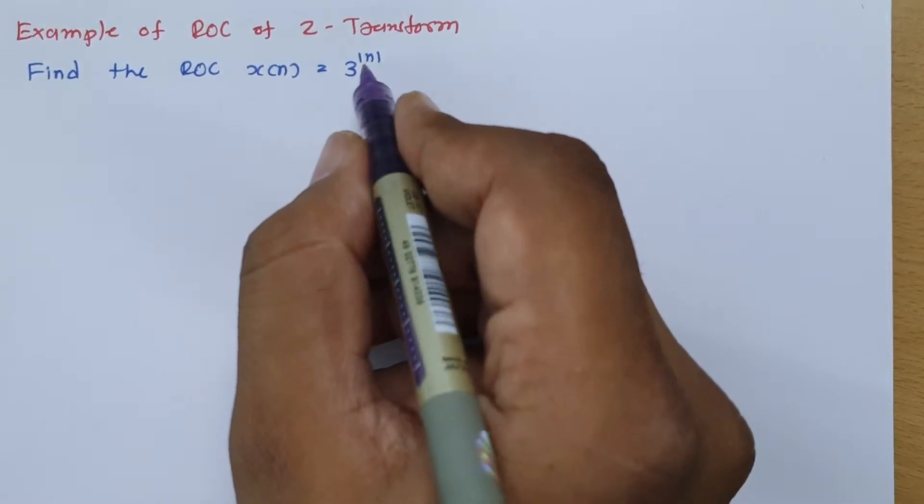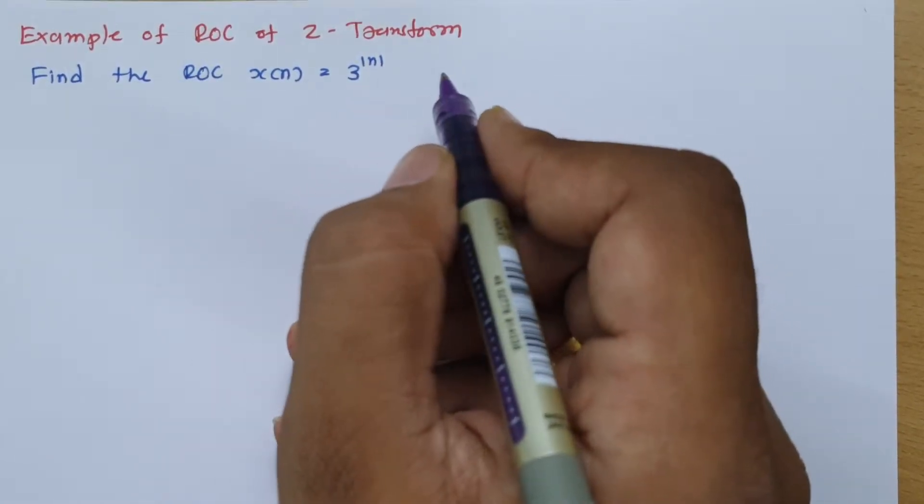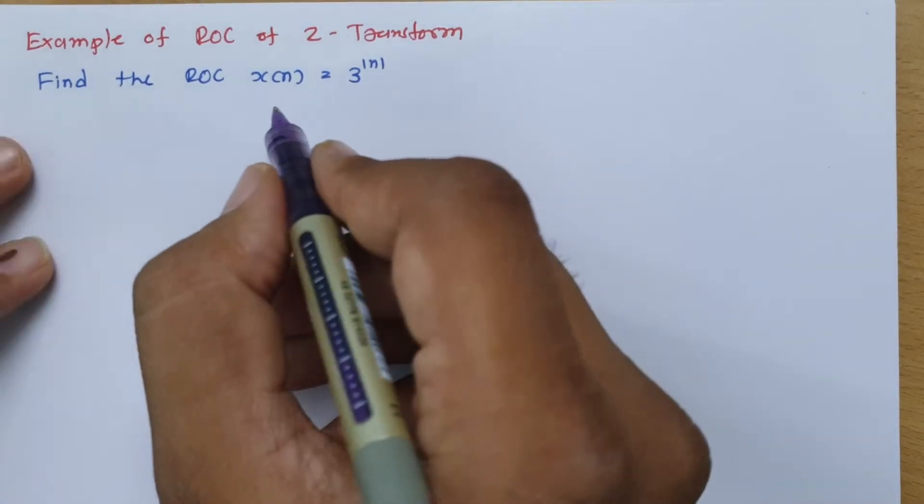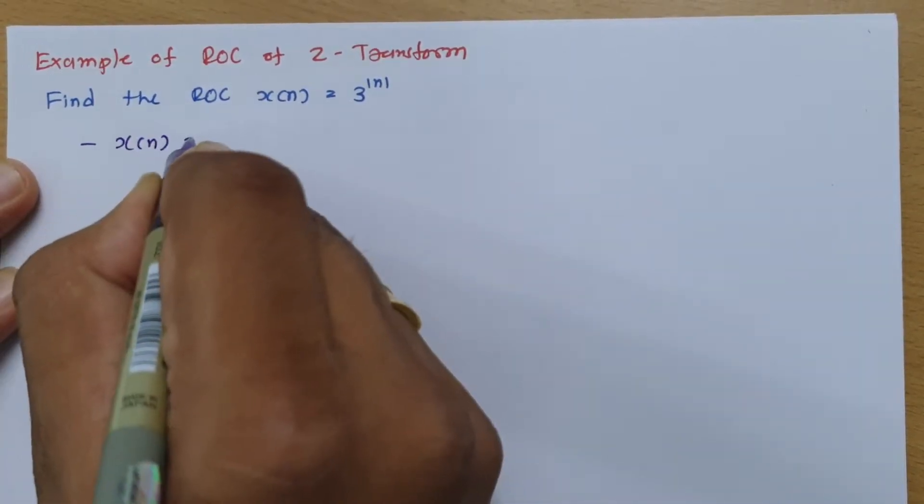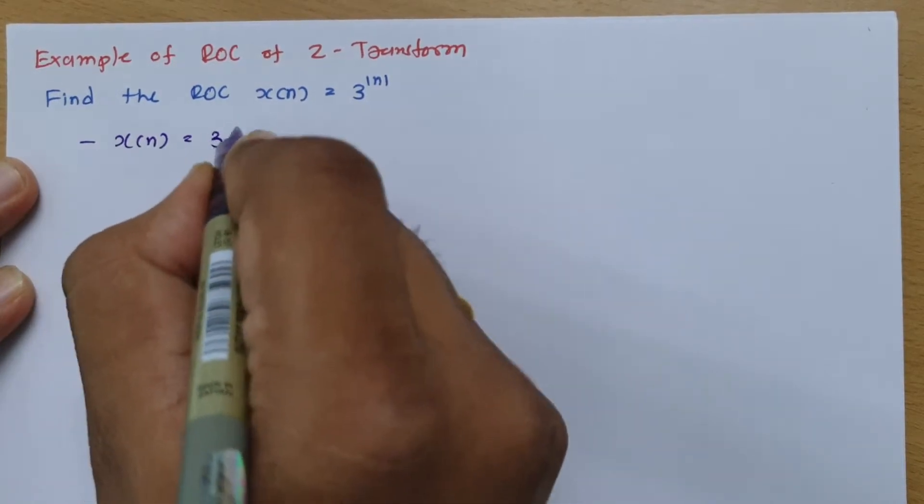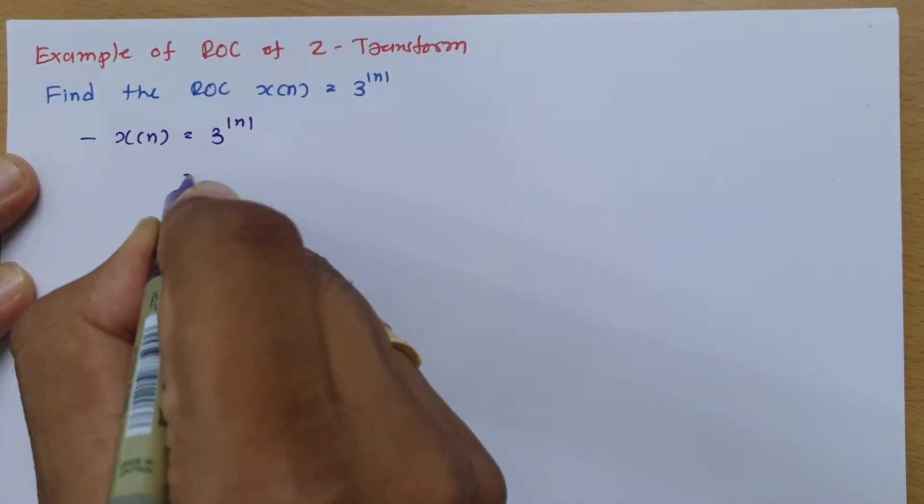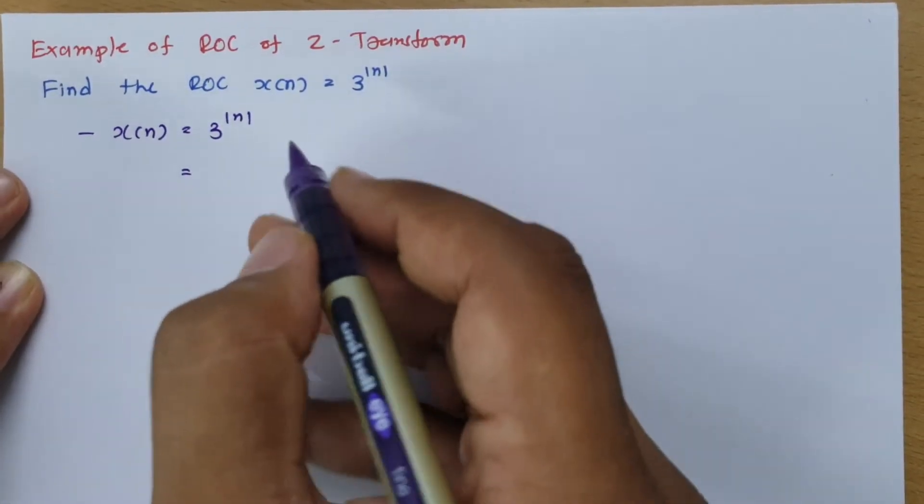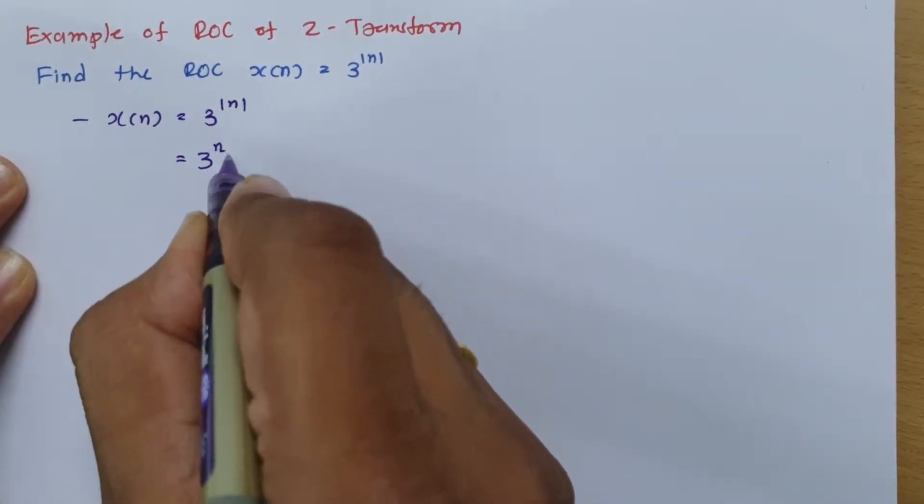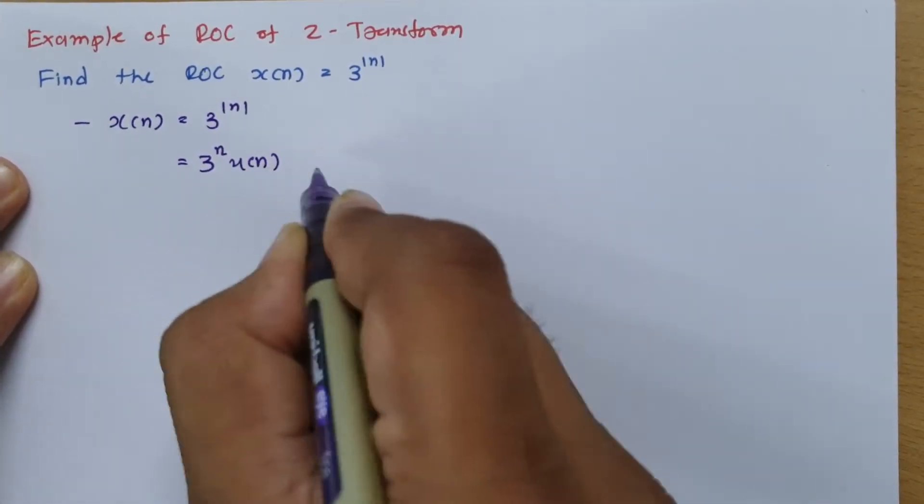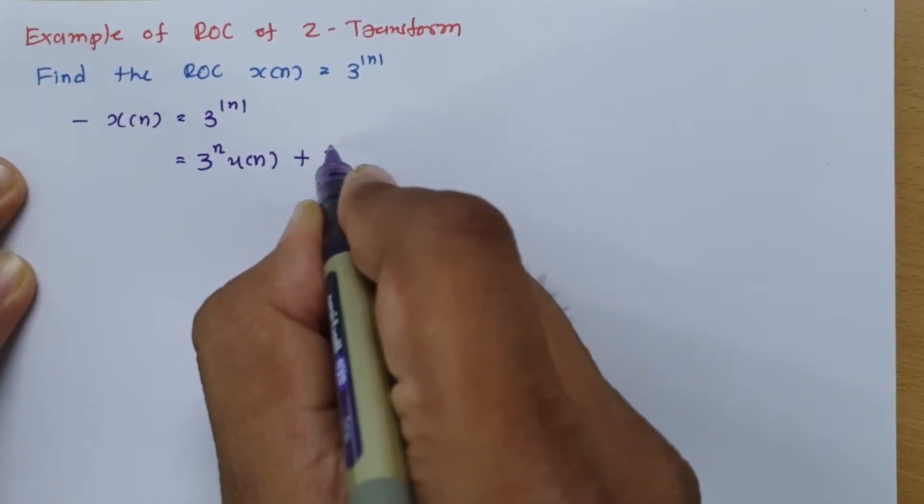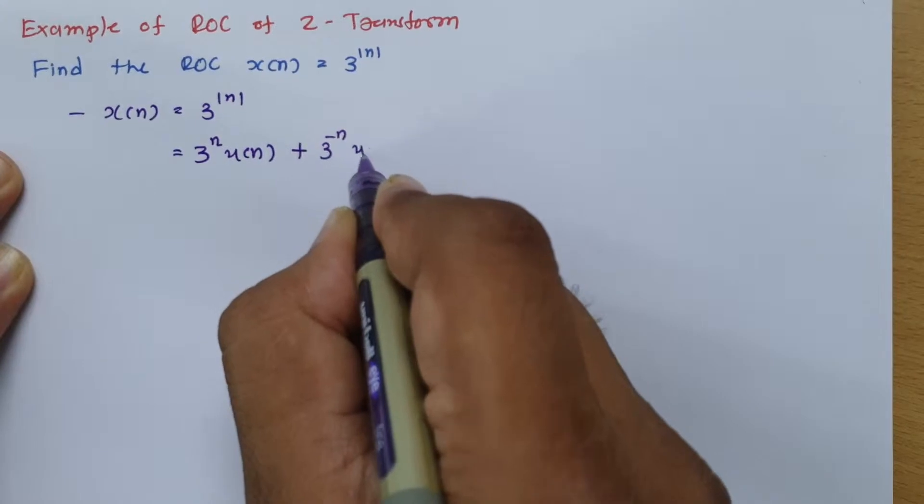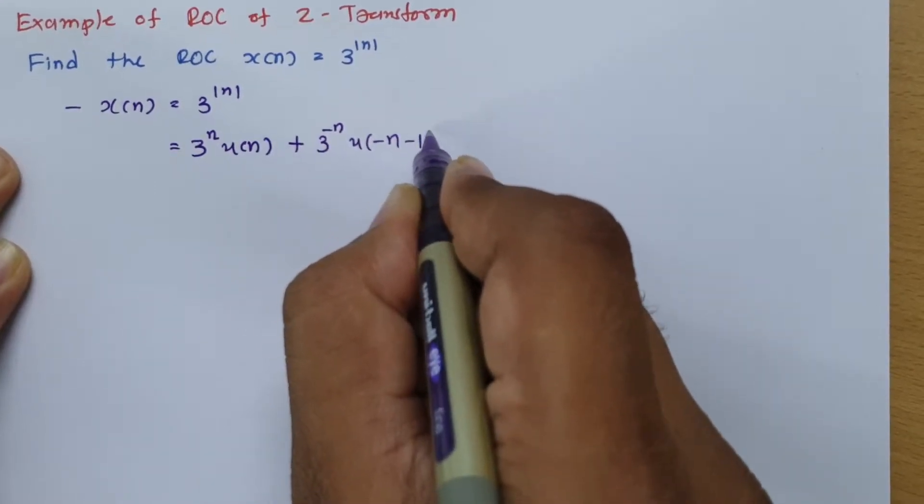It is the algebraic sum of positive direction plus negative direction. So if I want to write this x(n) in form of signal, then for right sided sequence I can say this is 3^n u(n), and for left sided sequence it should be 3^(-n) u(-n-1).